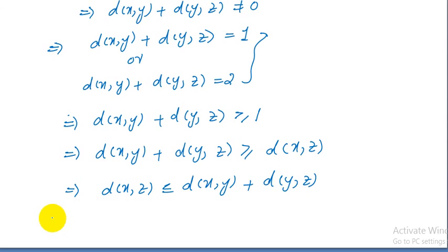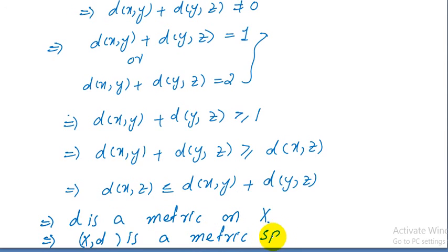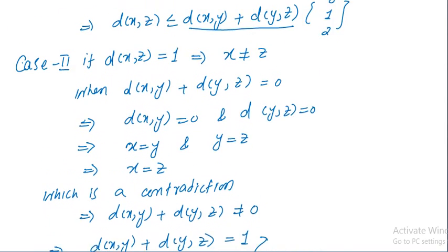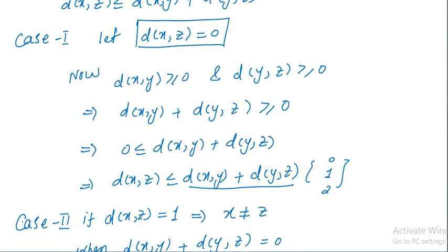This implies d is a metric on x, and this metric is called the discrete or trivial metric. We can write that (x, d) is a metric space, which is also called the trivial or discrete metric space. I hope you liked this video; if so, do not forget to subscribe to my YouTube channel. Thank you very much for watching.